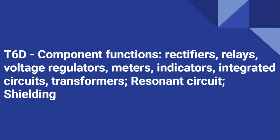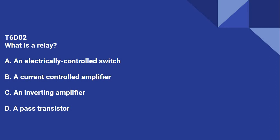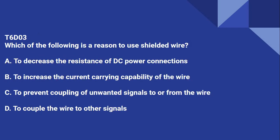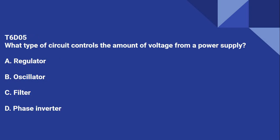T6D covers component functions: rectifiers, relays, voltage regulators, meters, indicators, integrated circuits, transformers, resonant circuits, and shielding. T6D01: Which of the following devices changes an alternating current into a varying direct current signal? That answer is a rectifier. T6D02: What is a relay? A relay is an electrically controlled switch. T6D03: Which of the following is a reason to use shielded wire? To prevent coupling of unwanted signals to or from the wire. T6D04: Which of the following displays an electrical quantity as a numerical value? That's a meter.